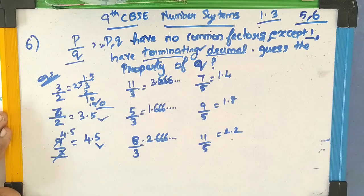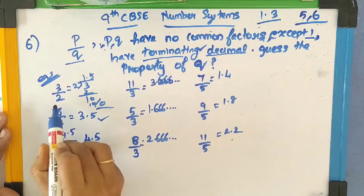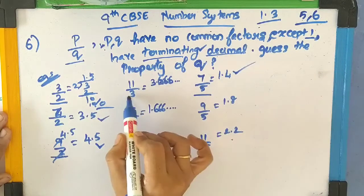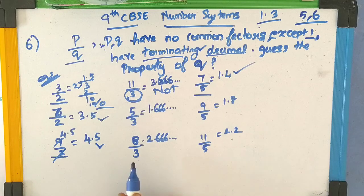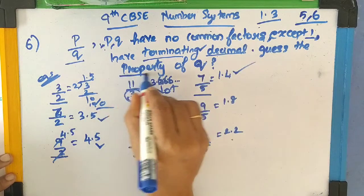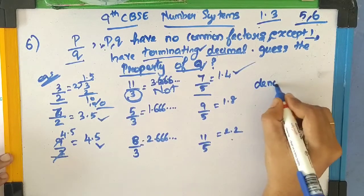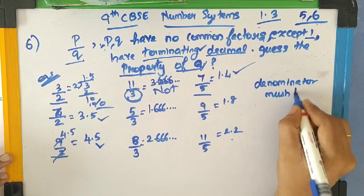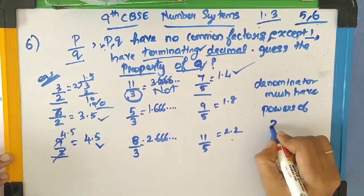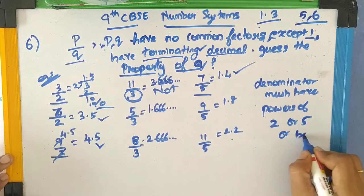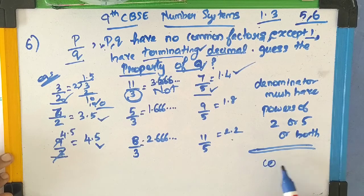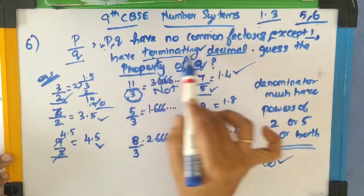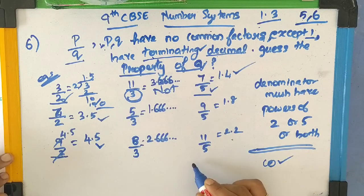Looking at these cases, we can clearly say that all cases with denominator 2 and denominator 5 are terminating decimals, while all cases with denominator 3 are non-terminating. So we can conclude: the property of Q, the denominator, is that when the denominator is a power of 2, or a power of 5, or both — for example powers of 10 like 17 divided by 10 giving 1.7 with remainder 0 — the fraction will be a terminating decimal. Therefore the property of Q is: powers of 2, powers of 5, or both.